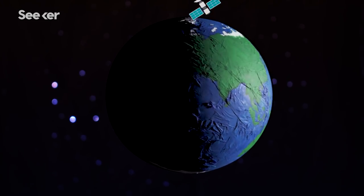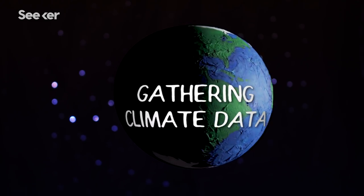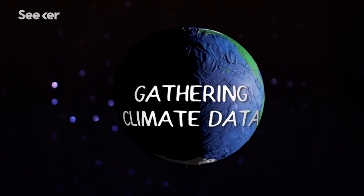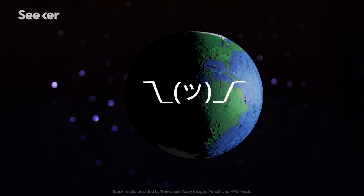That constant sunlight is useful for collecting images, monitoring weather, and gathering data on climate change. So while the Terminator doesn't really do anything, it is good for science.